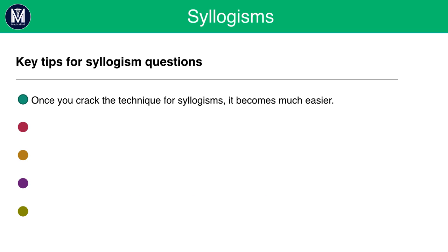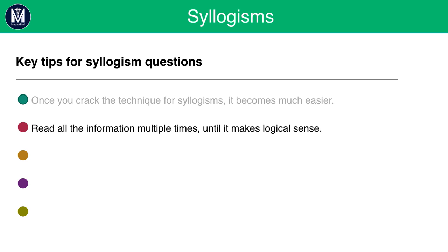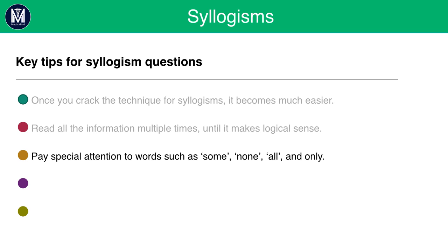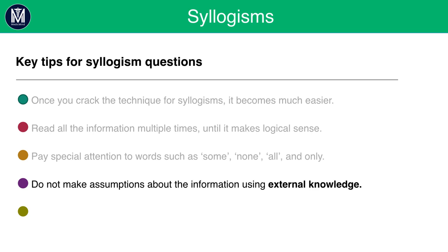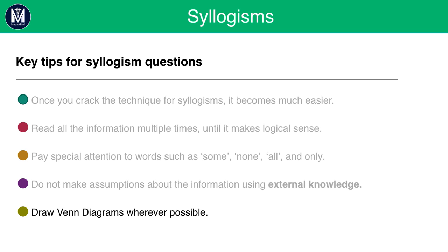Once you crack the technique for syllogisms it becomes much easier. You should read all the information multiple times until it makes logical sense. Try and pay special attention to words such as 'some,' 'none,' 'all,' and 'only.' You should never make assumptions using external knowledge — this will only confuse you. Syllogisms are designed to trick you, and candidates that use external knowledge will definitely get these questions wrong. Always draw Venn diagrams wherever possible.